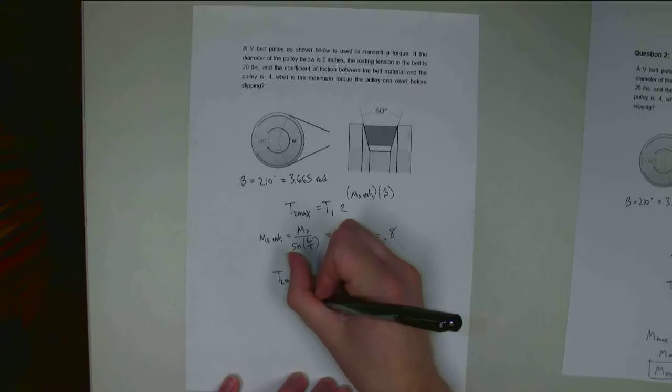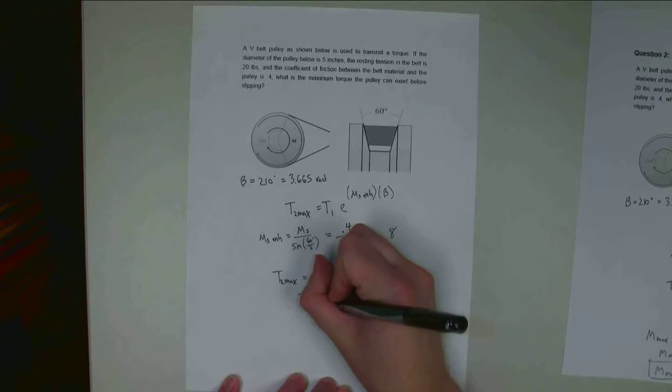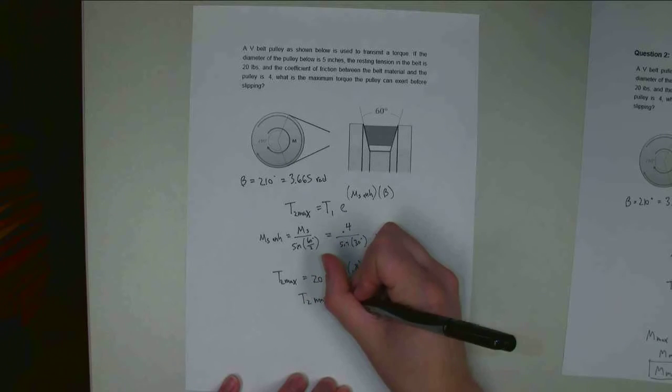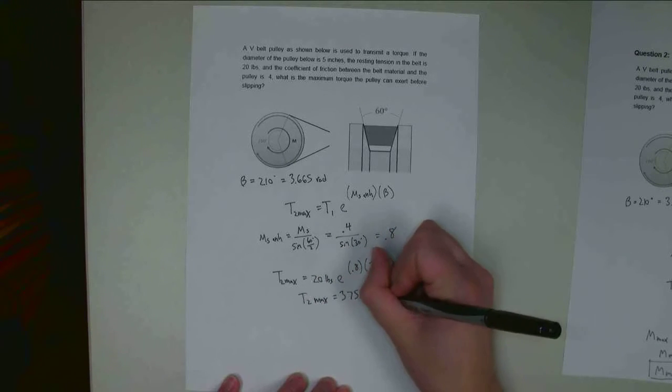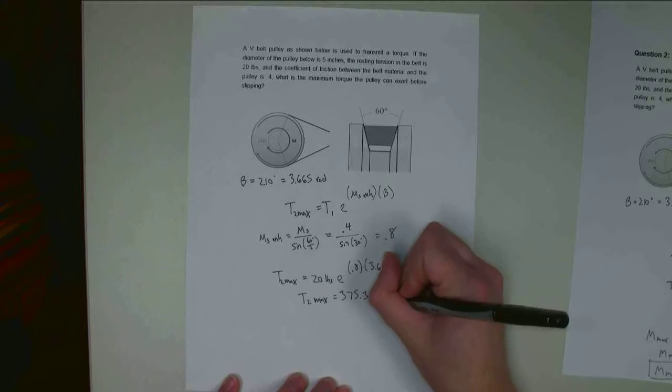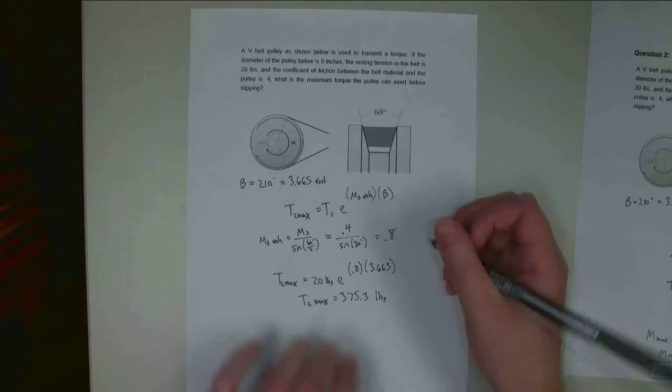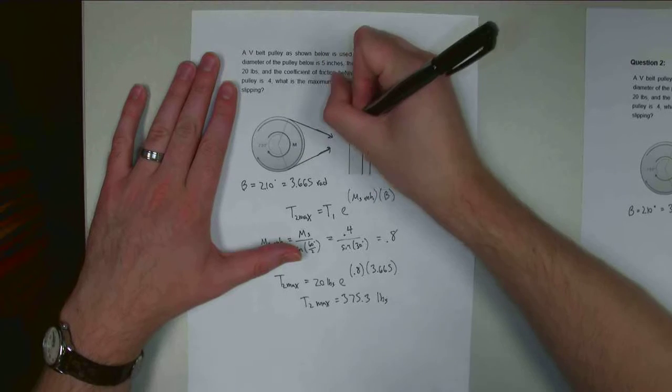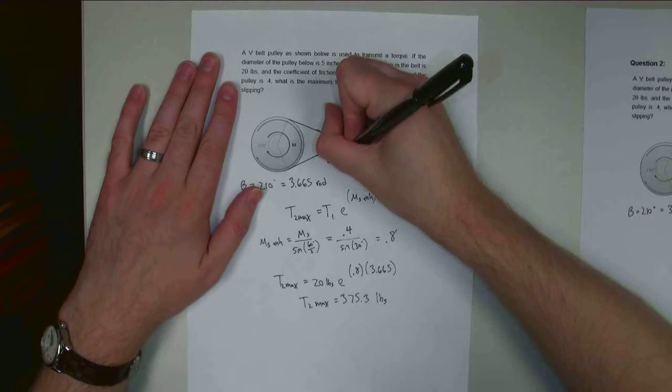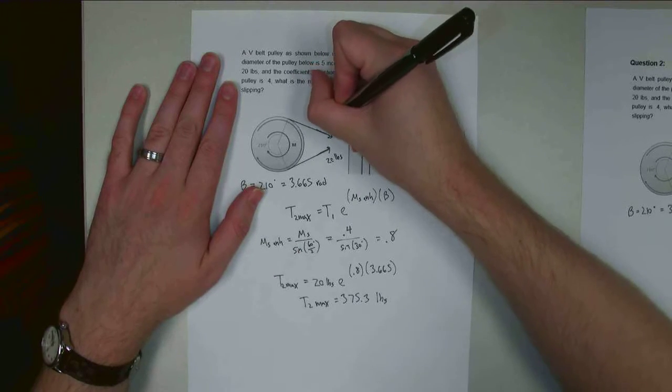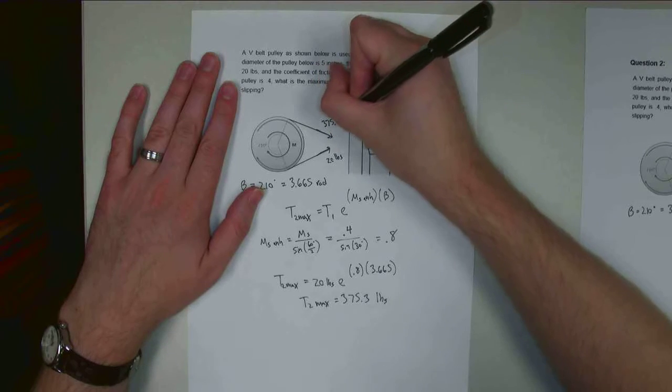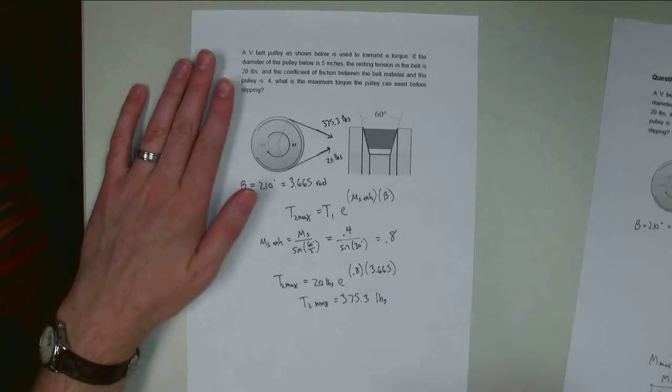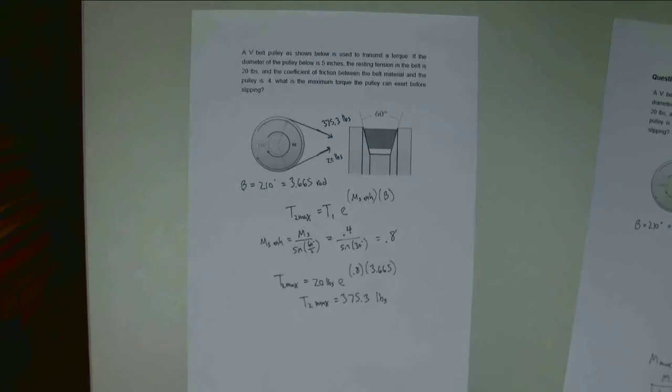All right, if I solve for T2 max, I'm going to end up with 375.3 pounds. And so that means that up here on one side, I would have 20 pounds. On the other side, I would have 375.3 pounds. And these would be the two tension forces that I'd see just before this thing starts to slip.